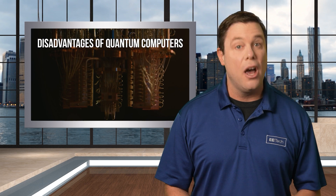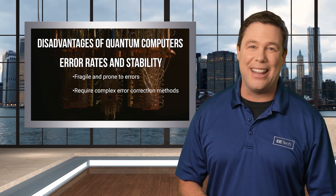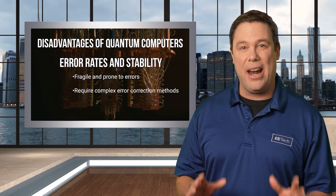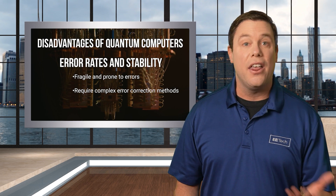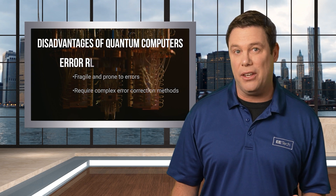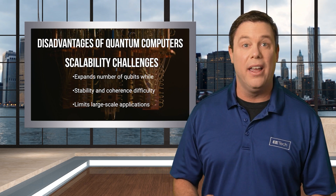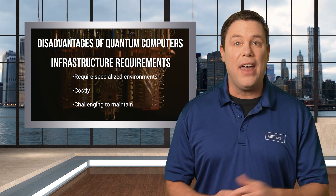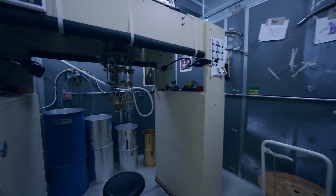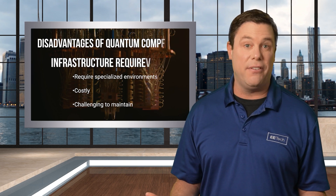Those are some massively important benefits, but there are some downsides. One big disadvantage is that quantum computers are too human — they don't always get things right. They have higher error rates because qubits are fragile and prone to errors from environmental interference, requiring complex error correction methods. Expanding the number of qubits while maintaining stability and coherence is difficult, limiting large-scale applications. They're also pricey, in part due to needing specialized environments such as extreme cooling near absolute zero — so not only are they costly, but they're also difficult to maintain.